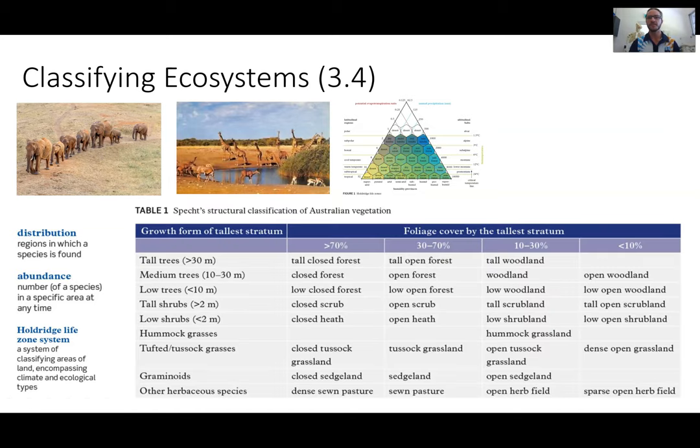The one however that we spend more time on is Specs Structural Classification of Australian Vegetation. And this looks at the tallest tree in an area. We then calculate the percentage of the foliage cover that that tallest tree provides just by vertical sightings observations. That will give us a column and then we think about the dominant vegetation species or structure and that will give us the row. So this is one way in which we can classify ecosystems.